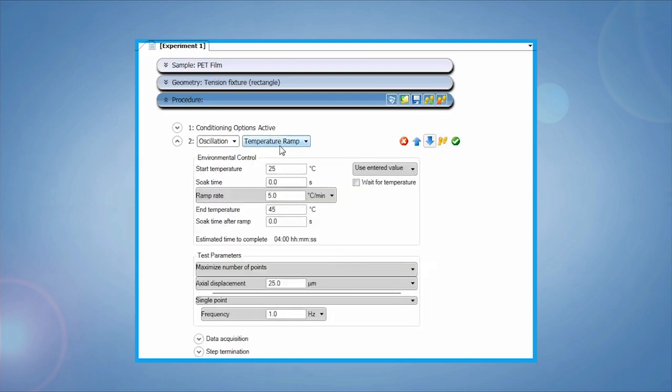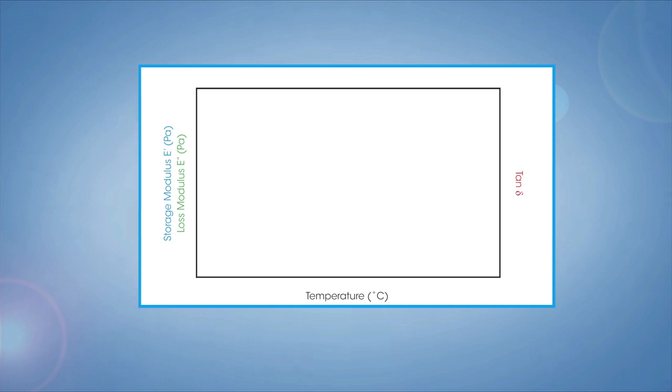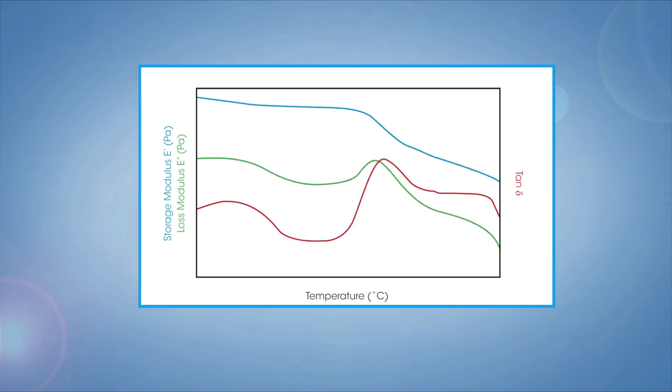This oscillation step can include an amplitude sweep to determine the linear viscoelastic region, a frequency sweep for viscoelastic characterization, a time sweep to determine stability, or a temperature ramp or sweep to measure thermal transitions and modulus as a function of temperature.